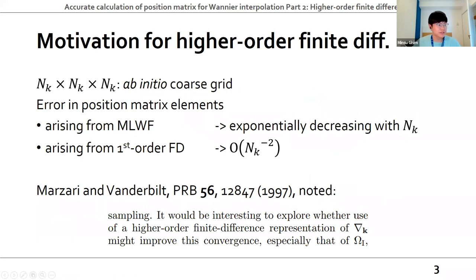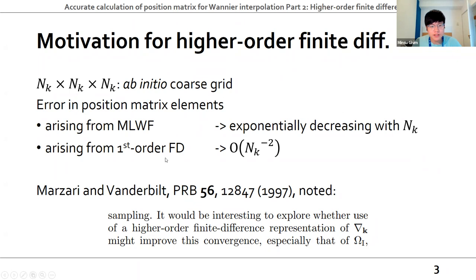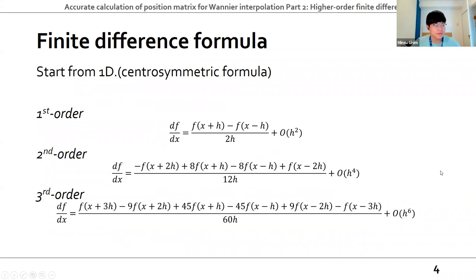Why it is important to consider the finite difference formula: the error of position matrix elements arising from maximally localized Wannier functions is known as exponentially decreasing with NK on the NK by NK by NK initial coarse grid. But the error arising from the first-order finite difference is of order NK to minus 2. Marzari and Vanderbilt mentioned in their PRB paper it would be interesting to explore whether higher-order finite difference representations of the gradient K might improve this convergence, especially the invariant part of the Wannier spread. So let's start from one dimension.